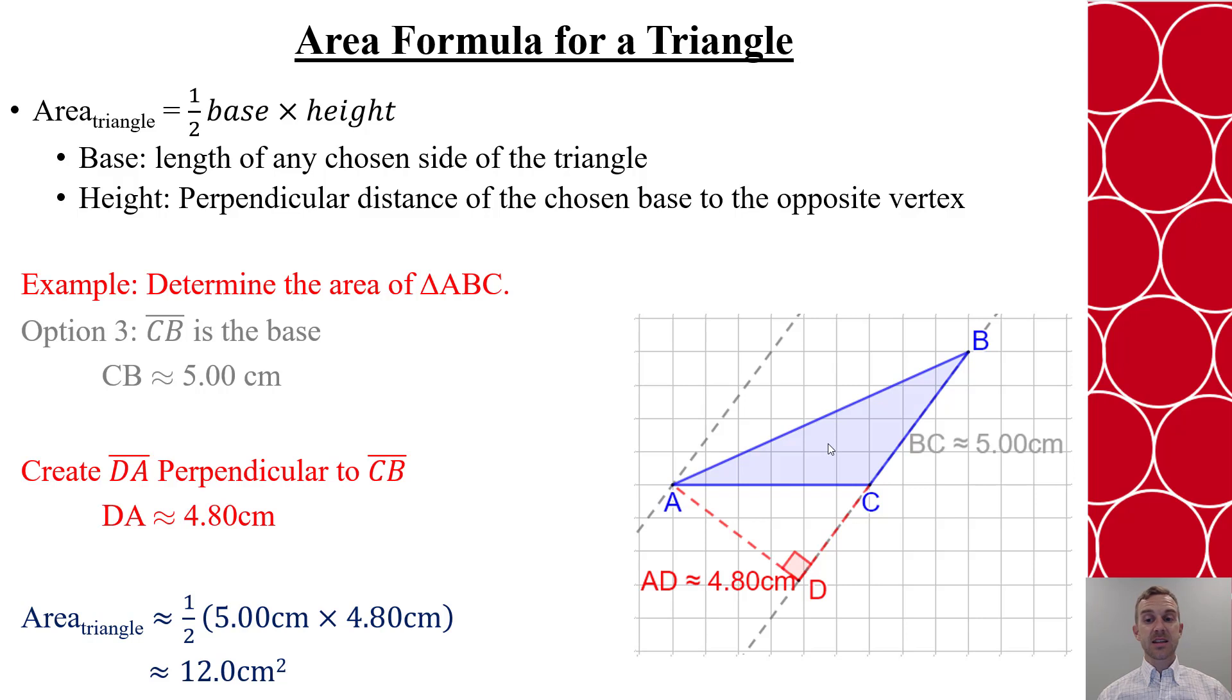So whether I used AC, BC, or AB as the base, every time I ended up with the same area of 12 square centimeters. That's important to recognize - we can use any side to find the area of a triangle.